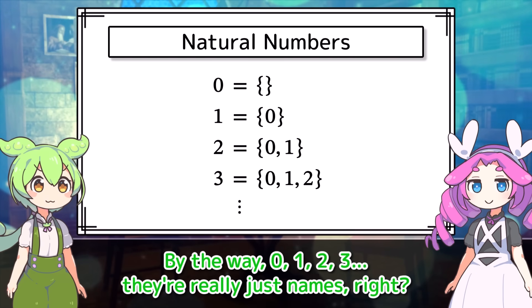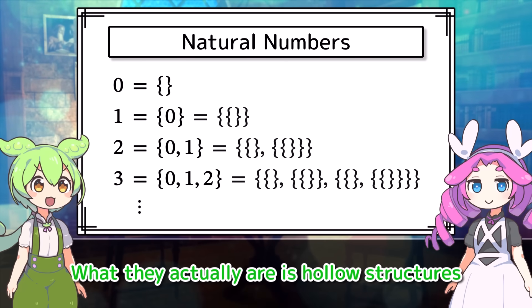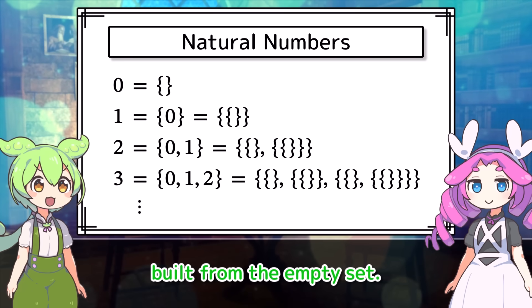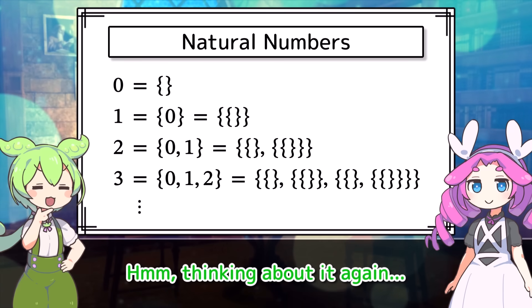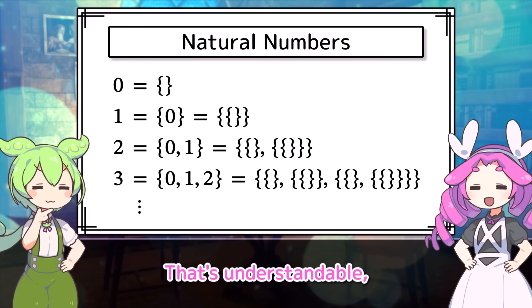By the way, zero, one, two, three, they're really just names, right? What they actually are is hollow structures, built from the empty set. Hmm, thinking about it again. Calling these natural numbers feels kind of weird to me. That's understandable.